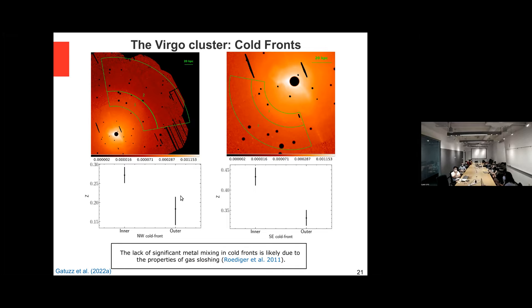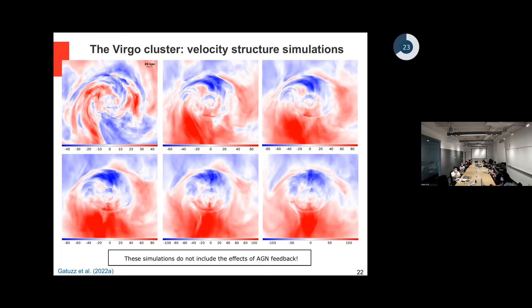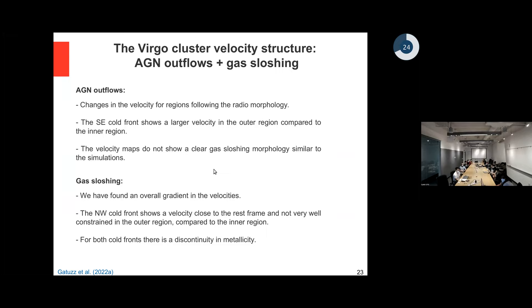The lack of significant metal mixing at cold fronts is a property of gas sloshing. So in conclusion for Virgo, from one side we are seeing signatures of AGN outflows, but also signatures of gas sloshing. We have run simulations but they do not include AGN feedback yet, and none of the simulations seems to match what we are seeing. Only gas sloshing can't explain the full velocity structure of the cluster — both AGN outflows and gas sloshing are needed to explain our results.